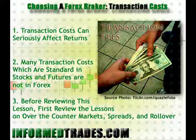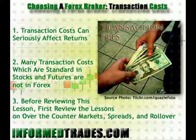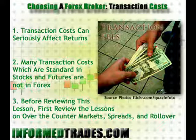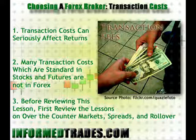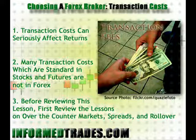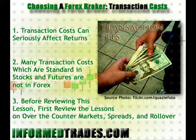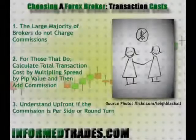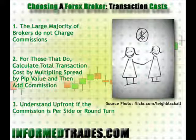There are generally four things that a trader should consider when reviewing the transaction costs of a broker he or she is considering trading with: number one, commissions, if any, that are charged by the broker; number two, the spread for the currency pairs that they wish to trade; number three, the rollover rates for the currency pairs they wish to trade, assuming they will be holding positions past the rollover cutoff; and number four, the quality of execution traders receive on their live trades.